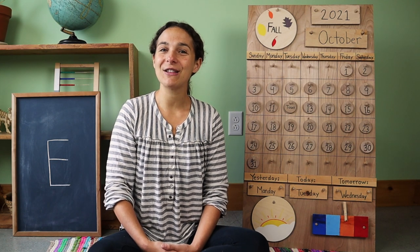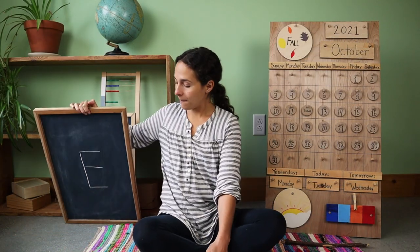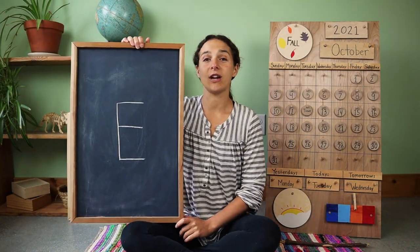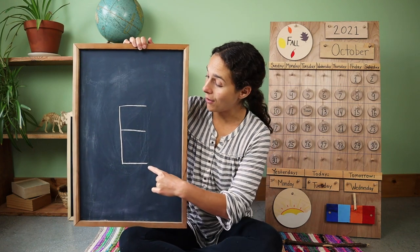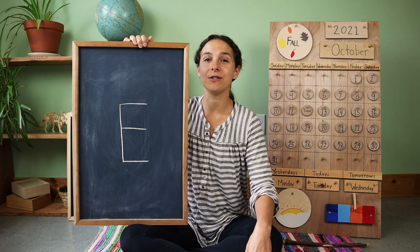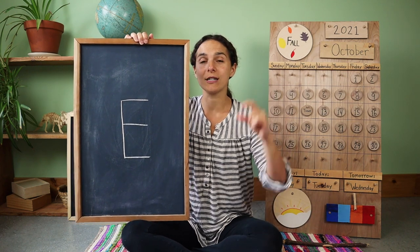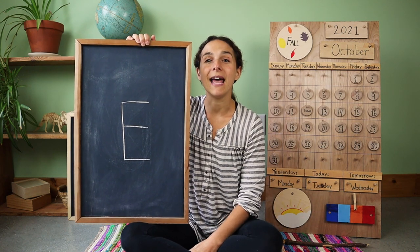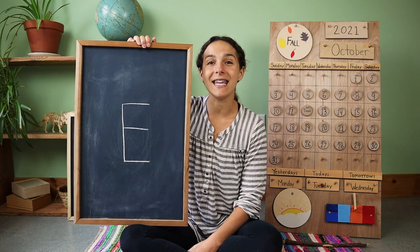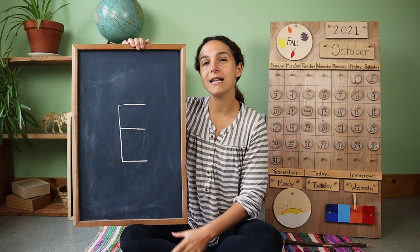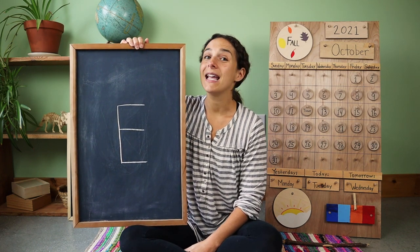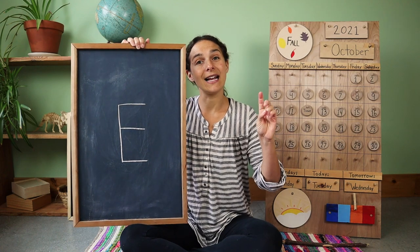It's warm. Thanks for sharing the weather with me. Let's move on to the letter, the number, and the sign of the week. Yesterday, we started talking about this capital letter. This letter makes two sounds. Let's make the short sound together: E. And the long sound goes like this: E. What uppercase letter is this? E. E says E and E.